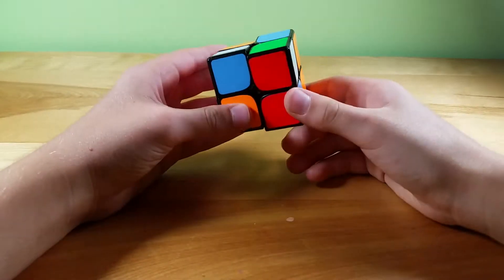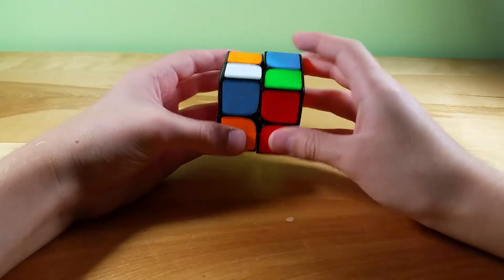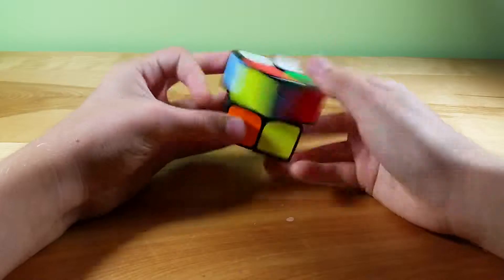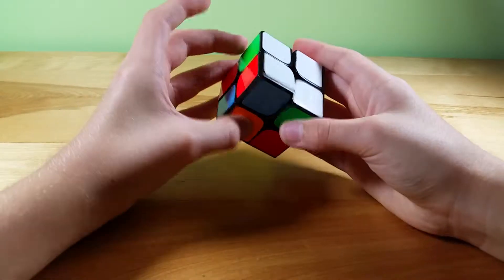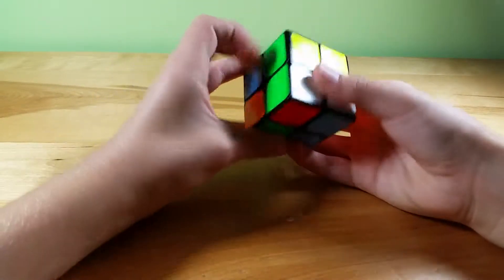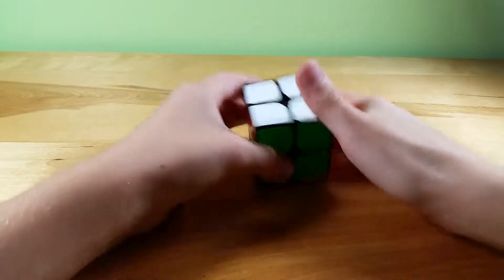U R' U' R' and that gives me a bar on the back. Anti-Sune. And then I would just rotate over and PBL.